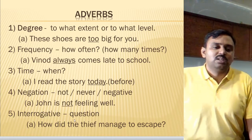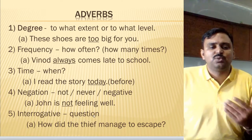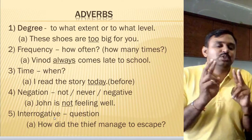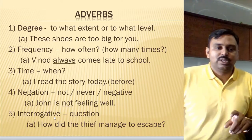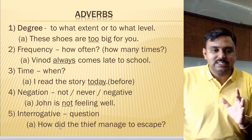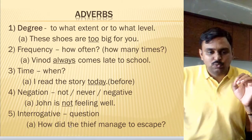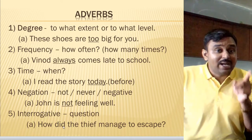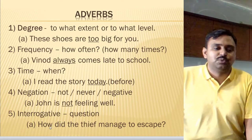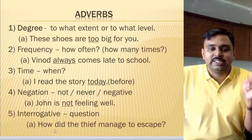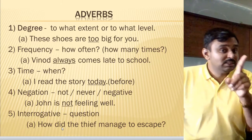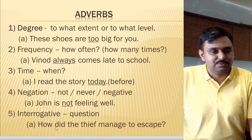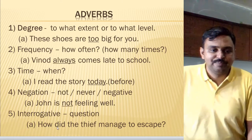Next we have interrogative adverb. It is about a question — whenever you find a question, it is an interrogative adverb. But remember, don't confuse interrogative adverb with interrogative adjective. In interrogative adverb, you will find a verb after the wh-word. In interrogative adjective, you will find a noun after the wh-word. For example, 'What gift?' — gift is a noun, so that is interrogative adjective. 'What is?' — 'is' is a verb, so that is interrogative adverb.